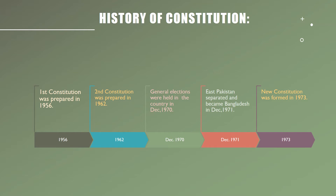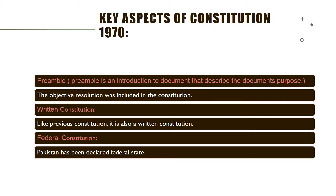There are major key aspects of the Constitution of 1973. The first is the Preamble. The Preamble is an introduction to a document that describes the document's purpose. Like the Constitutions of 1956 and 1962, the Objective Resolution has been included in the Preamble of the Constitution of 1973.